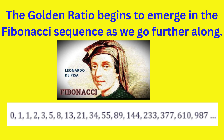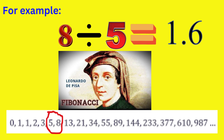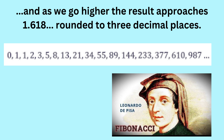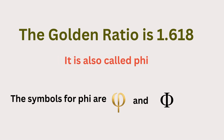The golden ratio begins to emerge in the Fibonacci sequence as we go further along. If you divide a Fibonacci number by its immediate predecessor, you get approximately 1.6. For example, 8 divided by 5 gives 1.6, and 21 divided by 13 is 1.6. As we go higher, the result approaches 1.618, rounded to three decimal places. This is the golden ratio, also called phi.